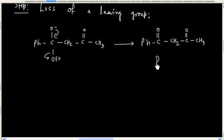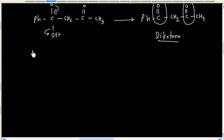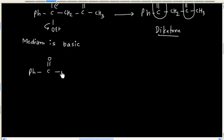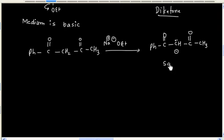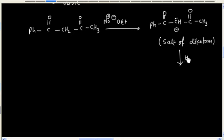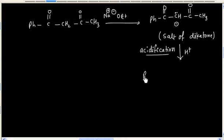And finally we will have loss of a leaving group. So the final product is a diketone — this has two ketone groups. Basically the medium is basic, so we will have an acid-base reaction and we will get the salt of the diketone. And if this salt is acidified, finally we will have the diketone.